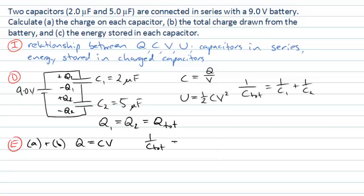So I can calculate that total capacitance from C1 and C2 in series. It's simply going to be one over C1, which I'll write as one over two, plus one over C2, which is one over five. I'm working in units of microfarads, so I have to keep track of that.